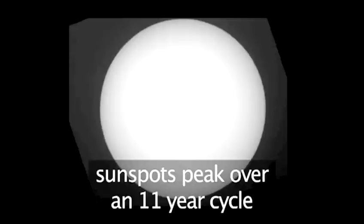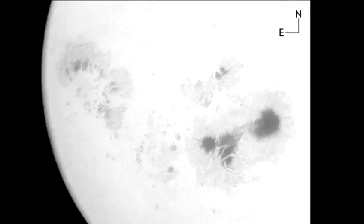Sunspots have been known to come and go in an 11-year cycle. There are periods when there are no sunspots on the surface to periods when the sun is freckled with masses of them.